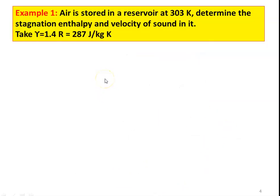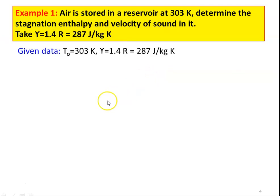Example number 1: Air is stored in a reservoir at 303 Kelvin. Determine the stagnation enthalpy and the velocity of sound in it. Take γ = 1.4 and R = 287 J/kg·K. Given data: the air is stored in the reservoir and is not moving — it is stagnant. So the temperature given is the stagnation temperature, T₀ = 303 K, γ = 1.4, R = 287 J/kg·K.